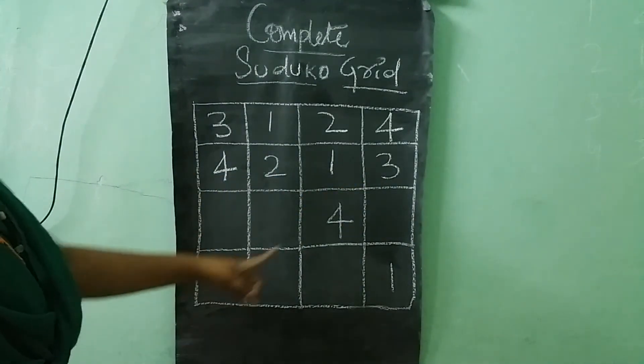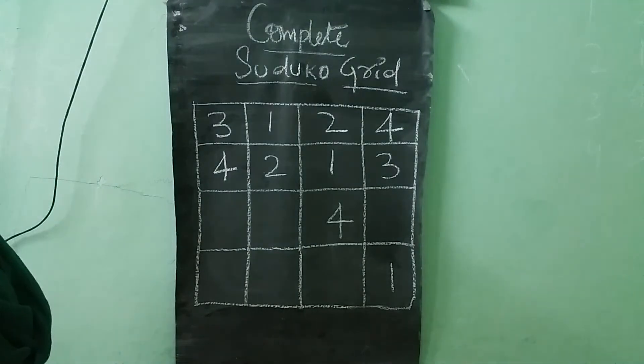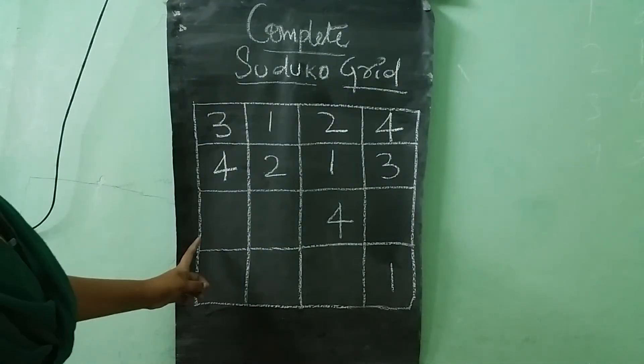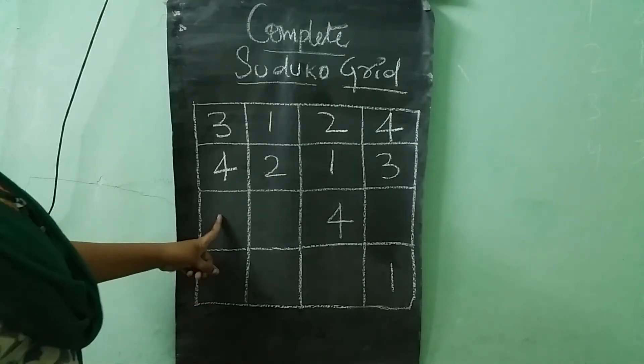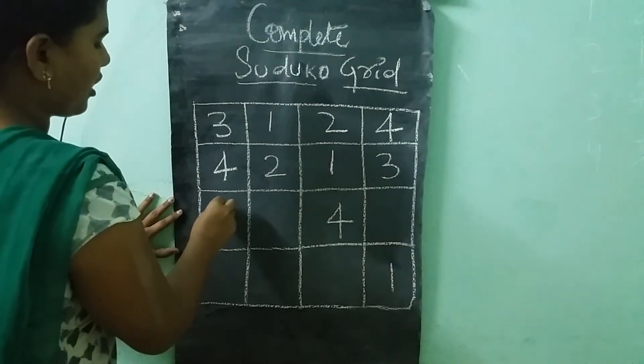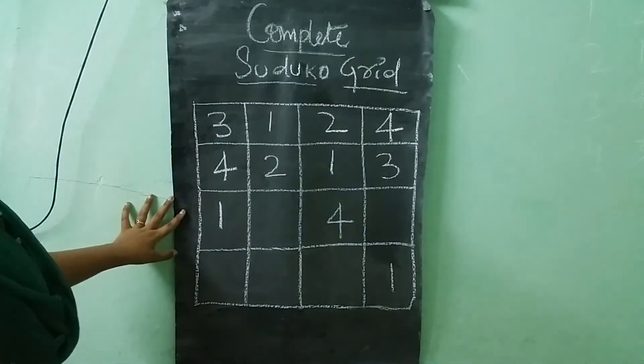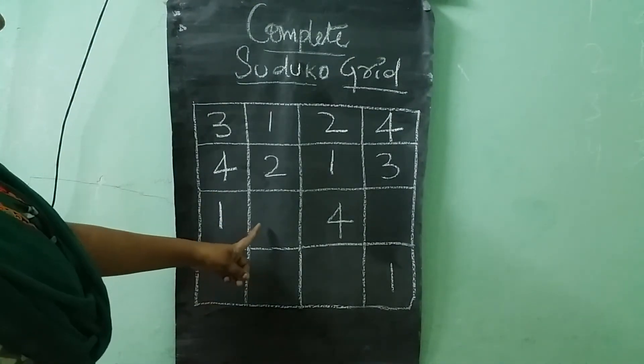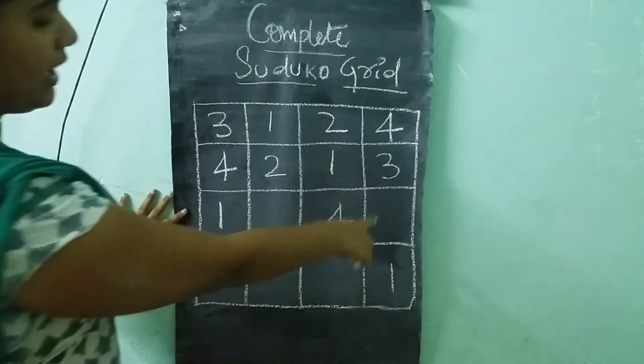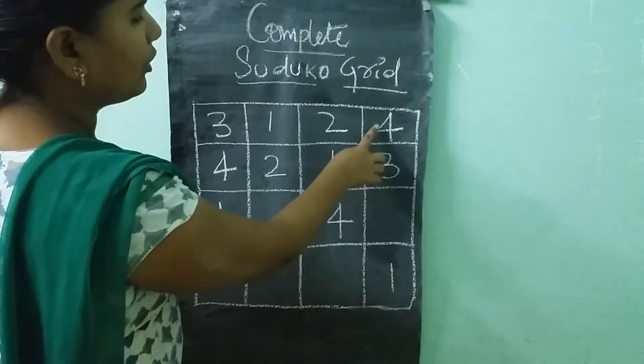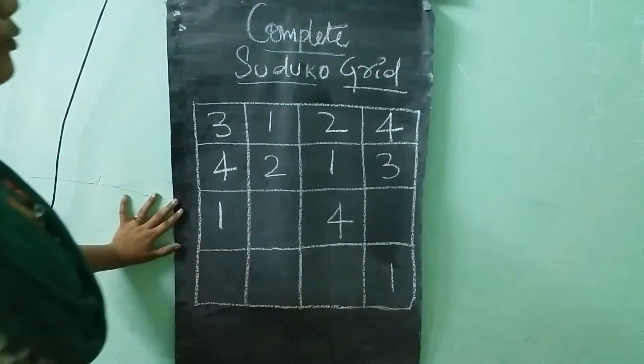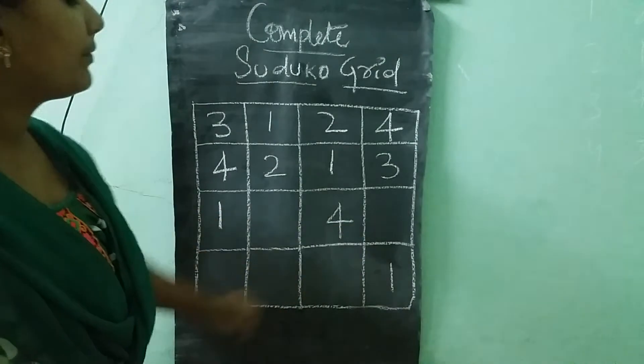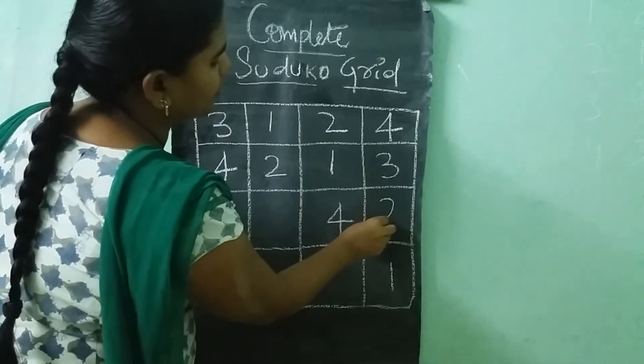In next row we have 4 numbers. Remaining 1, 2, 3. So we want to write 1, 2, 3 numbers. Where we write one number children? I am writing in first box. I am writing 1. Next, next, next. Here we have 1, 4, 3. So remaining what number is left? So we need to write here 2.